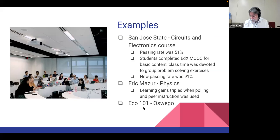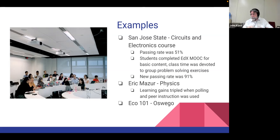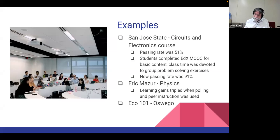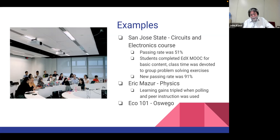I did the same thing at Oswego. Before introducing this approach in my large intro class, average students were performing about average on a standardized measure at both the beginning and end. After introducing it, the median student was performing at about the 65th to 70th percentile, sometimes higher. It dropped a bit recently, and dropped a lot last semester, but I think that was a pretty much universal problem in many classes.